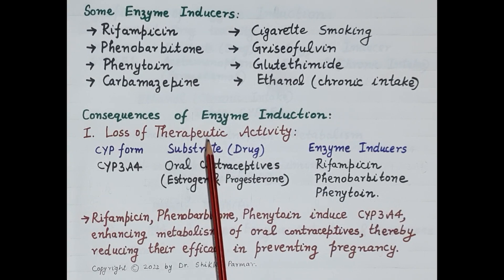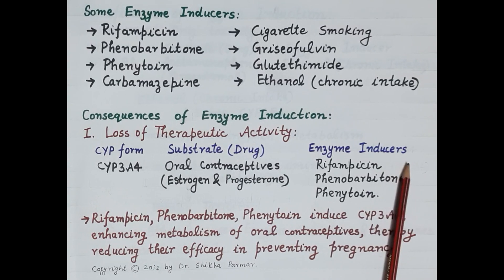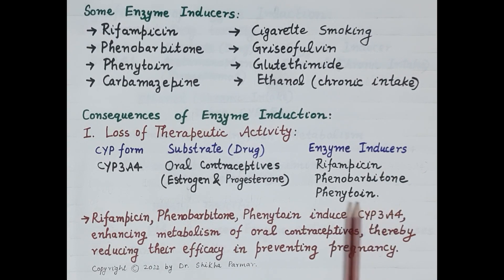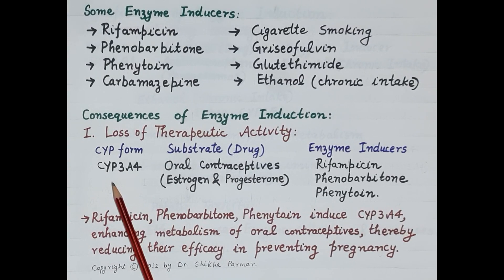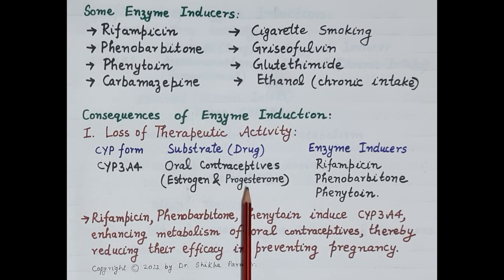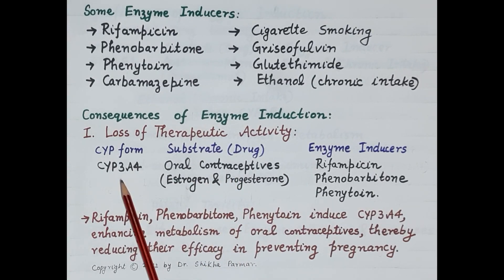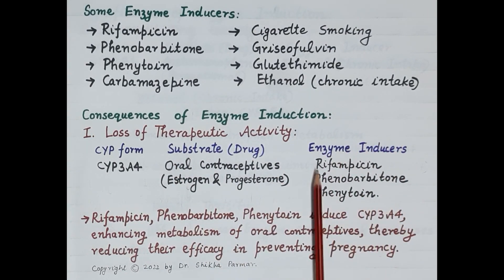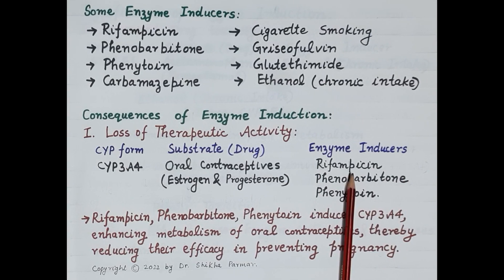Enzyme induction can cause loss of therapeutic activity. In this example, enzyme inducers such as rifampicin, phenobarbitone, and phenytoin increase the synthesis of the cytochrome 3A4 microsomal enzyme. The substrate drug is the oral contraceptive, which consists of synthetic estrogen and progesterone. Oral contraceptives are metabolized by cytochrome 3A4.